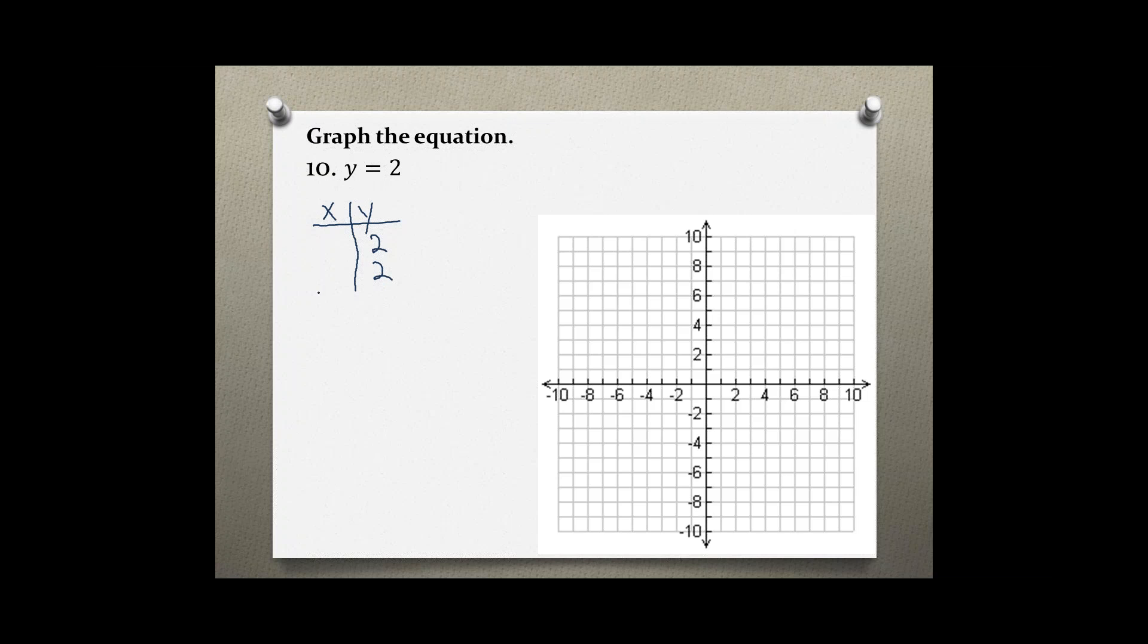Now, you can randomly pick any two x values. Again, my coordinate system is from negative 10 to 10, so anything between that is fine.